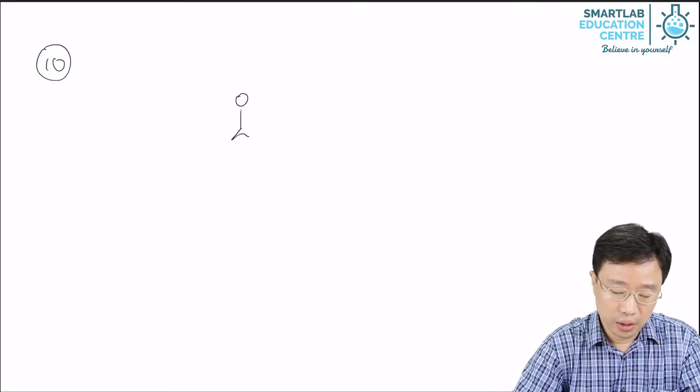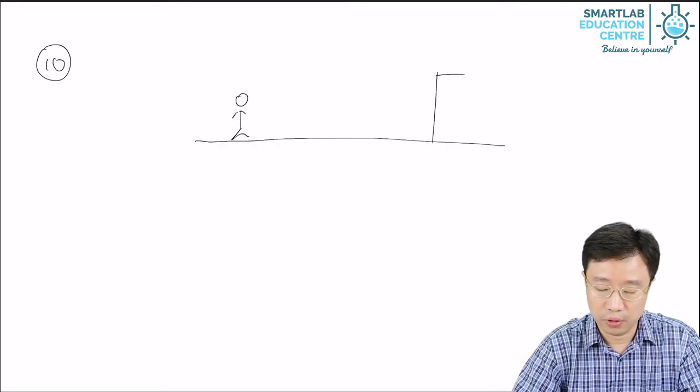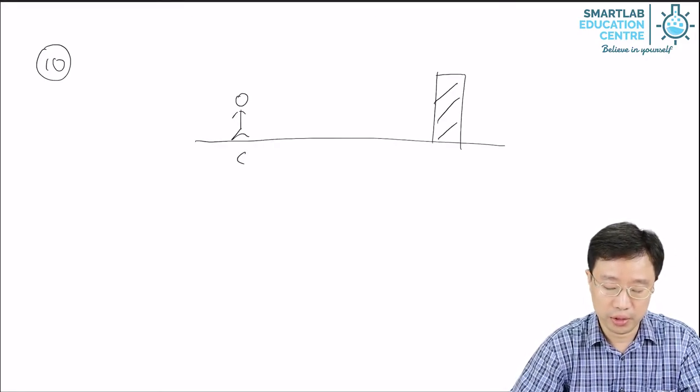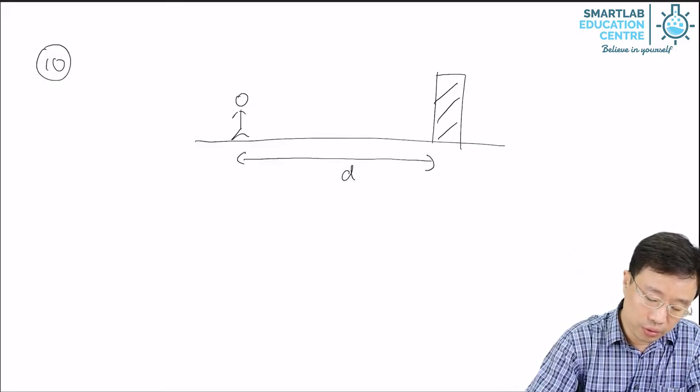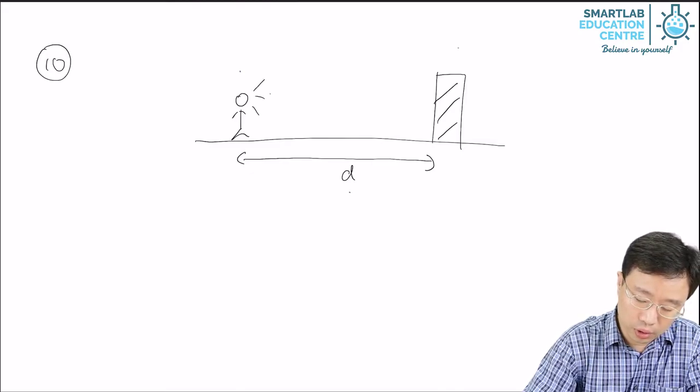In this point 10, you see there's a person shouting in front of a wall. The wall is a distance d from the person. The sound that the person makes will travel from him to the wall and then bounce back.